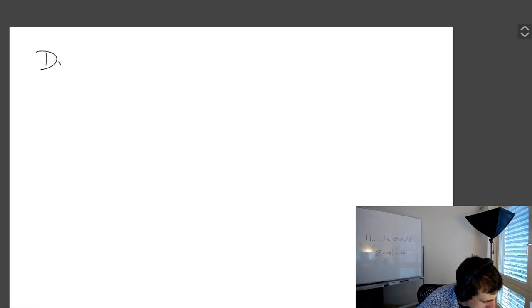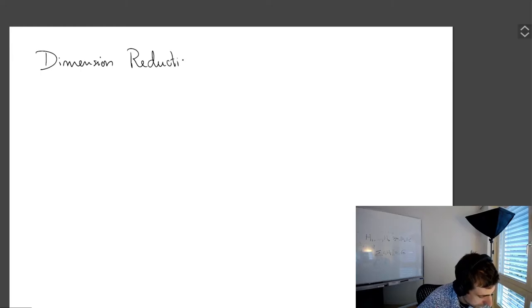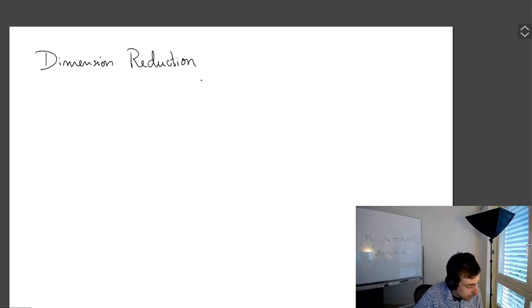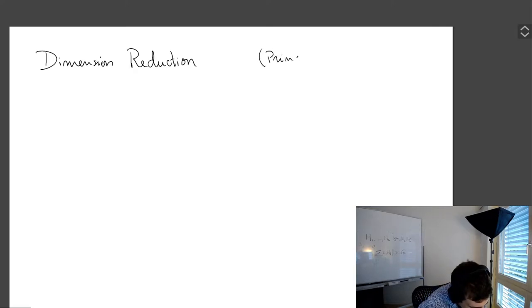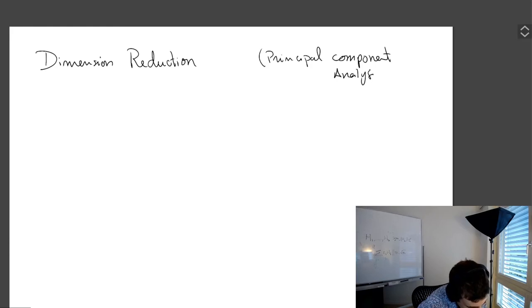So we're going to talk about dimension reduction today. Dimension reduction is also referred to as principal component analysis, in the way that we're going to talk about it. Principal component analysis — very popularly known as PCA.